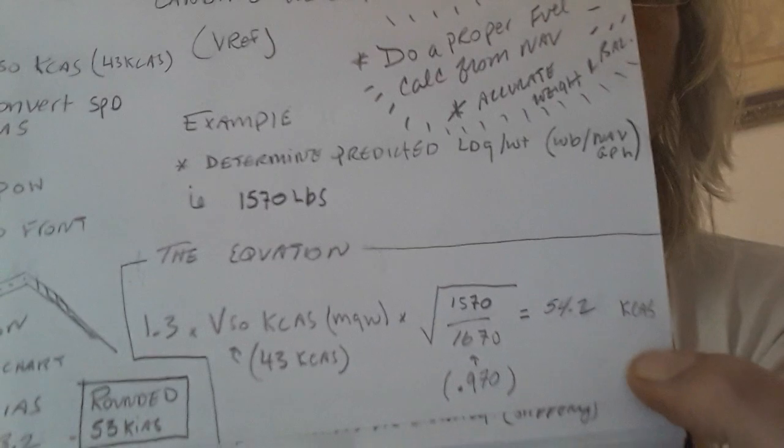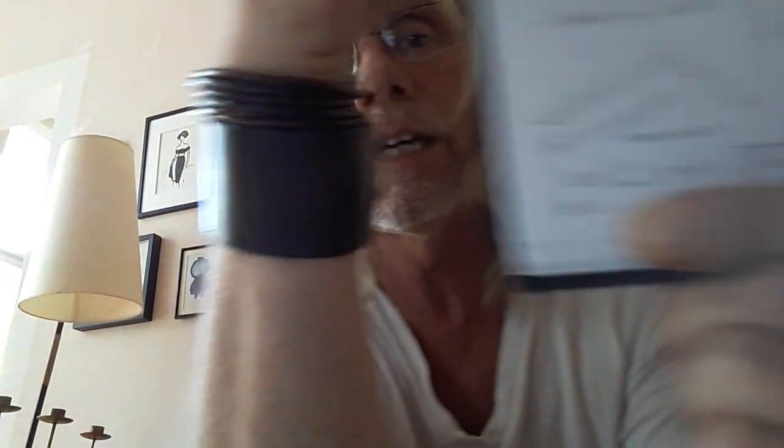That gives you an answer of 54.2 knots calibrated airspeed. We then move that number to the conversion chart. In the performance section of your POH there's a calibrated versus indicated airspeed conversion chart. Calibrated airspeed accounts for position error from the pitot tube under the wing — the airflow around it is affected by different flap settings. It's not what you see on your airspeed indicator; that's indicated airspeed, which has an error. The calculation is done in CAS, then we convert to IAS.